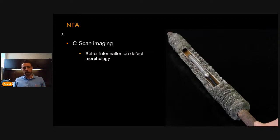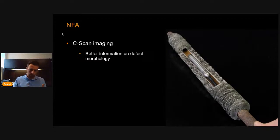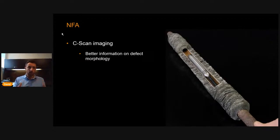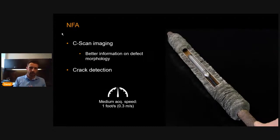That's where we bring in NFA — Near Field with Array capabilities. We added many small coils so we can get C-scan imaging. First advantage: we're using NFA technology to see what's inside, not affected by the outside. With C-scan imaging, we get better information on defect morphology, crack detection — a major advantage — all at the same speed as near field: about one foot per second, or 0.3 meters per second.